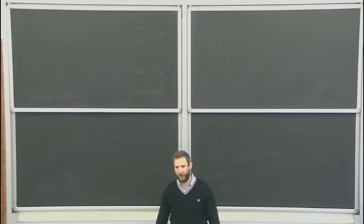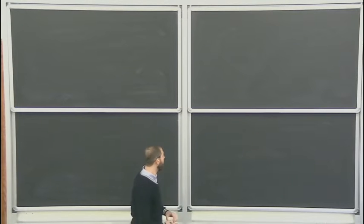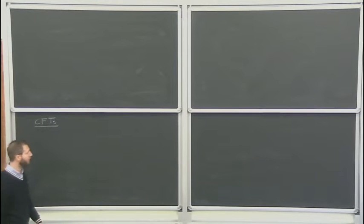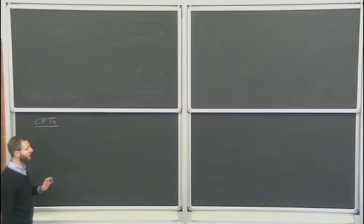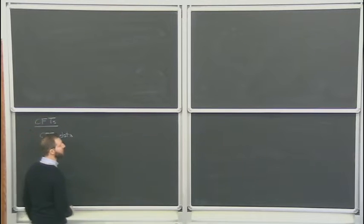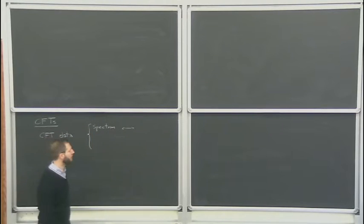In this last lecture, we finally combine together all the ingredients introduced so far. Let me remind you what we have obtained. We gave a formal definition of a conformal field theory in terms of operators and their properties. The CFT is defined by the conformal data: the spectrum of operators, which is equivalent to providing two-point functions for all operators in your theory.